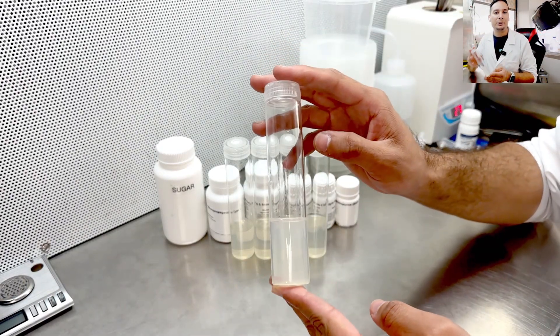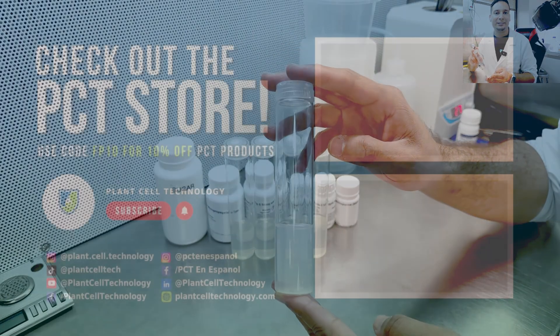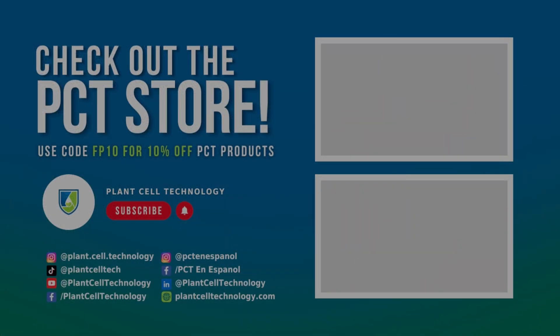And just like that, this is how you make Plant Tissue Culture Media with the new Plant Cell Technology Starter Kit. Thanks for watching the video. If you are enjoying these tissue culture videos, make sure to follow us on social media for more informative content. And if you are interested in conducting your own tissue culture experiments, check us out at PlantCellTechnology.com for all the products you need to get started. Use code FP10 for 10% off on your first purchase.